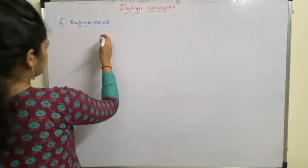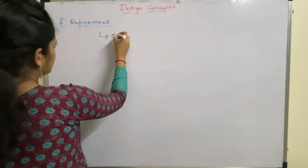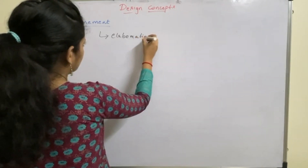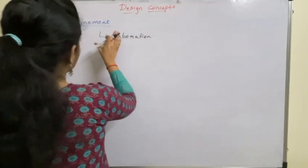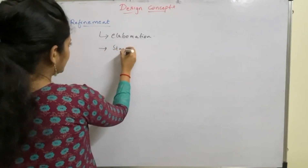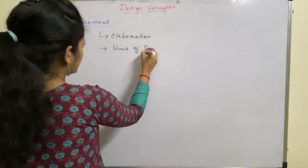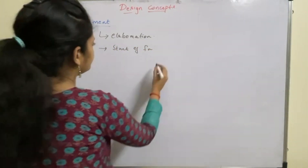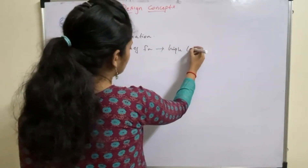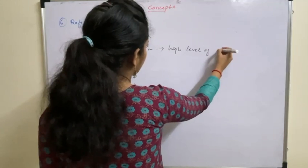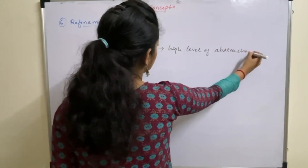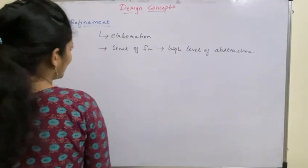This word is Refinement. Refinement is a process of elaboration. You begin with a statement of function that is defined at the higher level of abstraction.